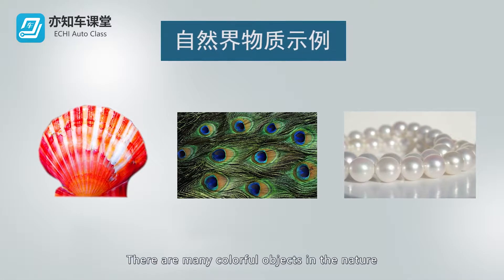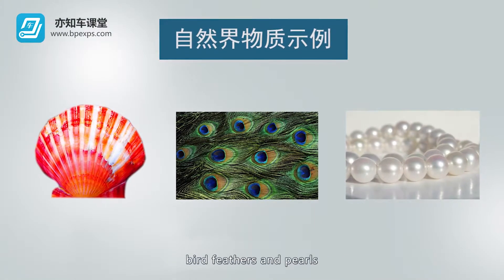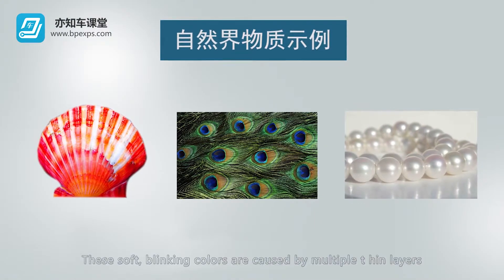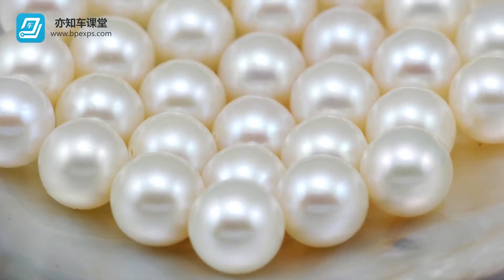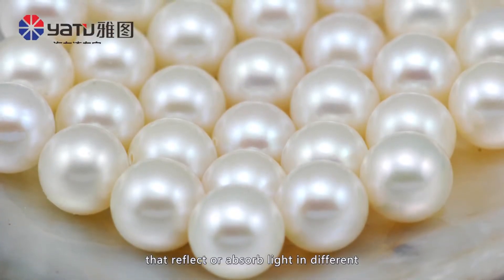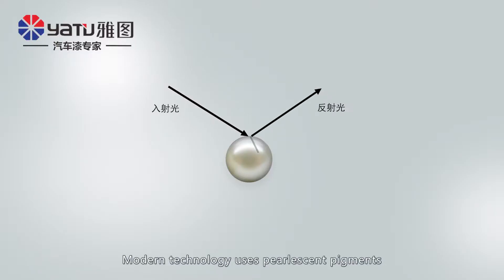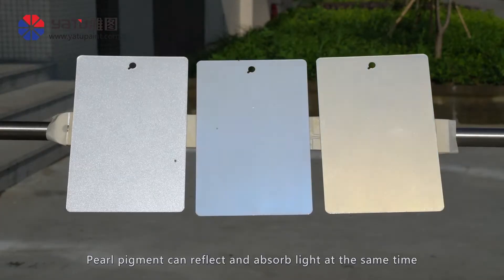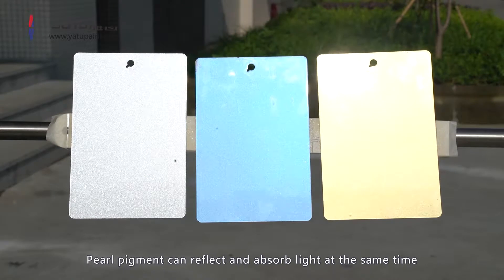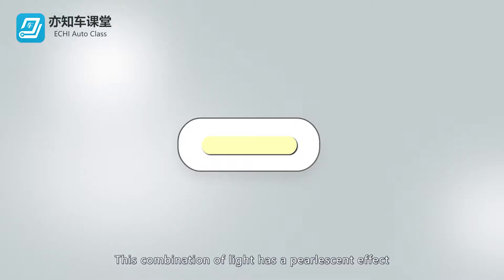There are many colorful objects in nature, such as shells, bird feathers, and pearls. These soft, blinking colors are caused by multiple thin layers that reflect or absorb light in different, variable ways. Modern technology uses pearlescent pigments to reproduce this flash effect. Pearl pigment can reflect and absorb light at the same time, and this combination of light has a pearlescent effect.